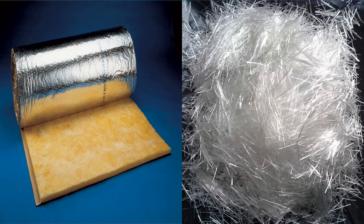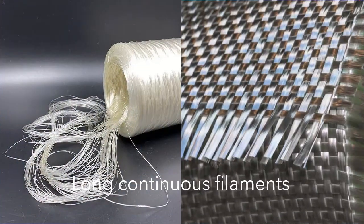Glass fiber products fall into two categories with different production methods for each. The first category is fibers for thermal insulation and air filtration, in which the fibers are in a random, wool-like condition, produced by centrifugal spray. The other type is long continuous filaments, which are suitable for fiber-reinforced plastics, yarns, fabrics, and fiber optics, and are produced by the drawing operation.